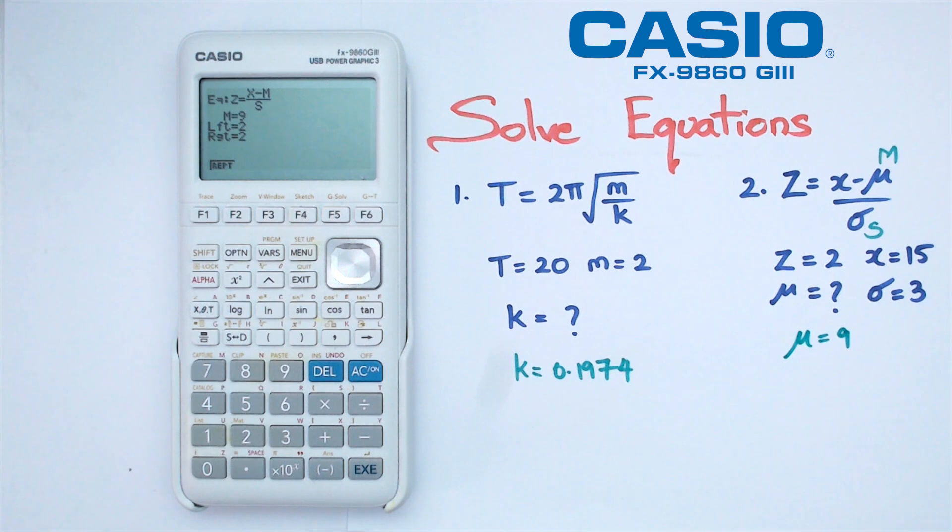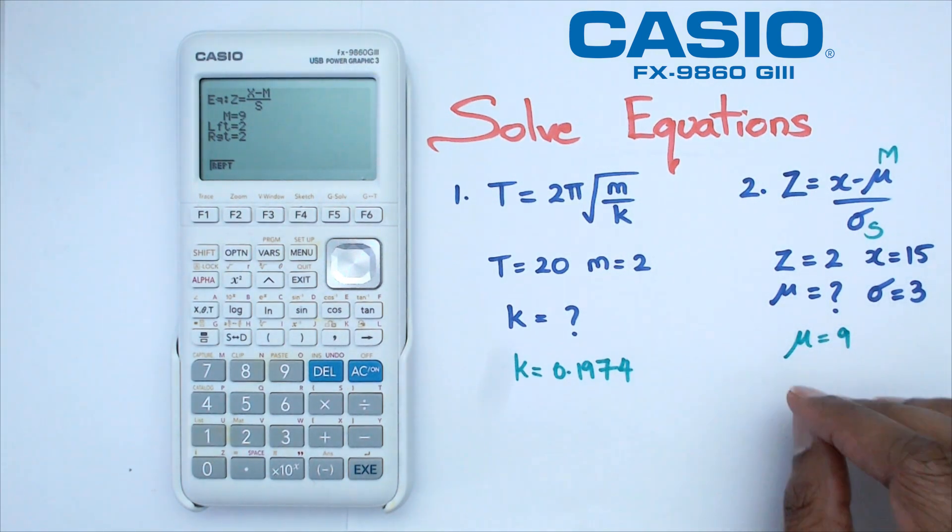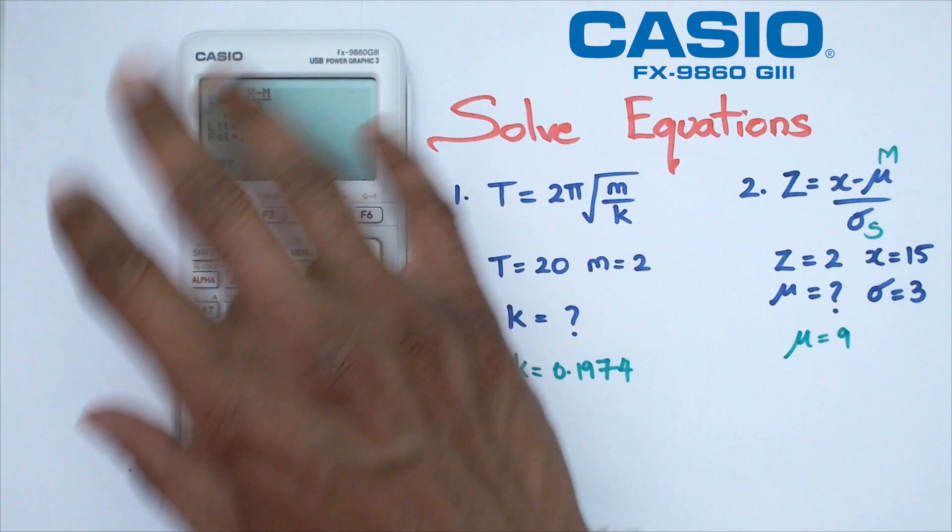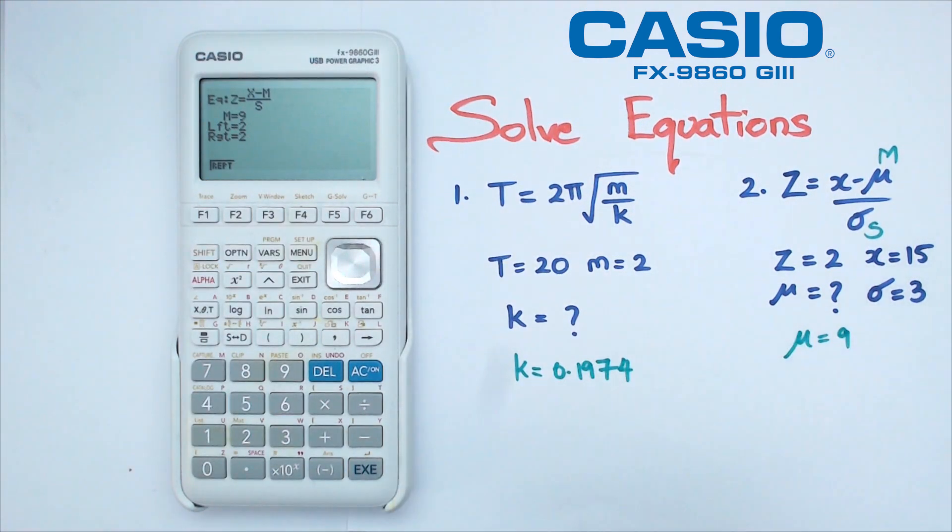Let's actually think about this. If we do 15 minus 9, that's going to be 6. 6 divided by 3 is going to give us 2. So we know that the mean in this case is going to be 9. Or the way I use the solver, I've got alpha M is actually equal to 9.